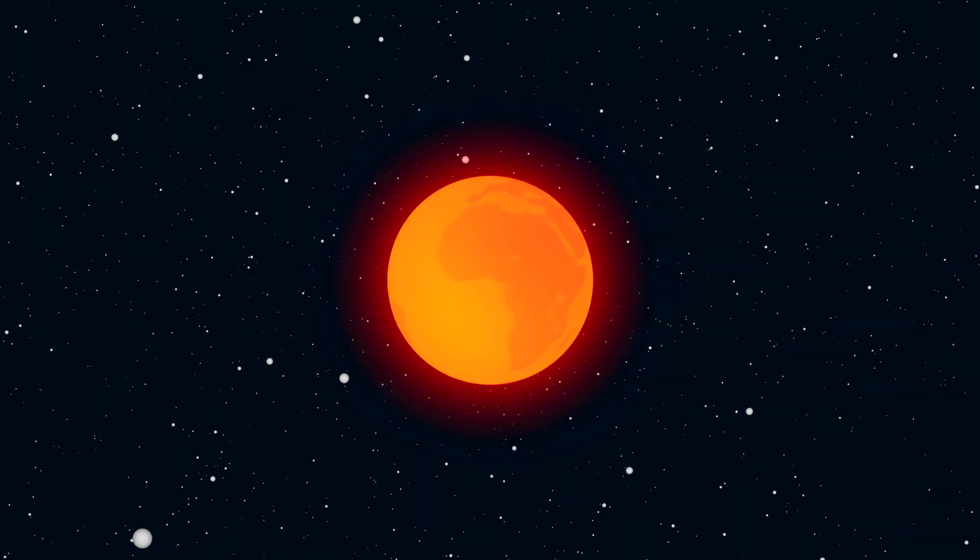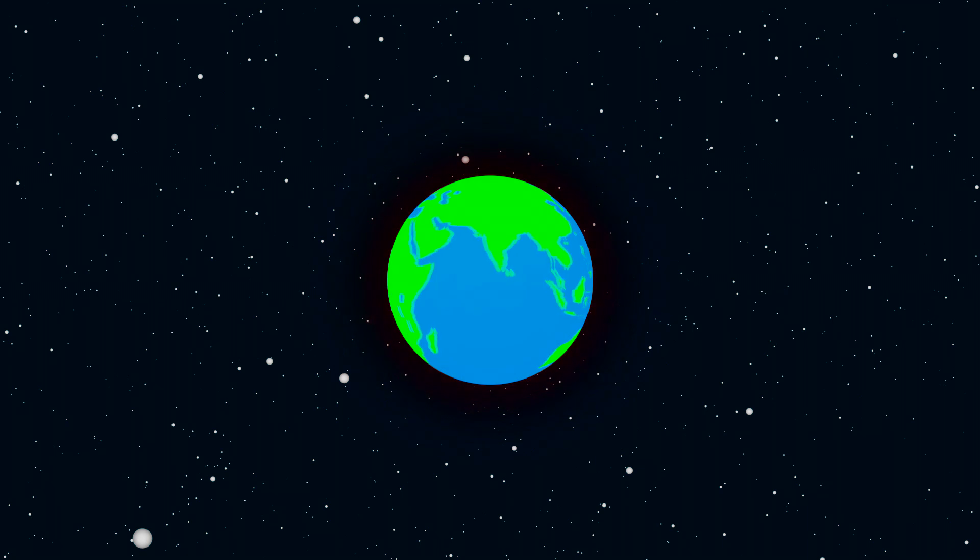At this time, Earth was a hot sea of lava constantly getting hit by asteroids. The water particles brought up from the asteroids cooled down the Earth over time to form the ocean.